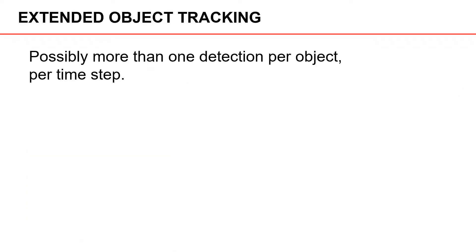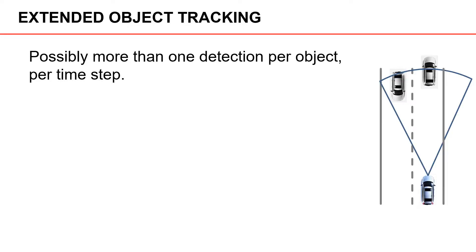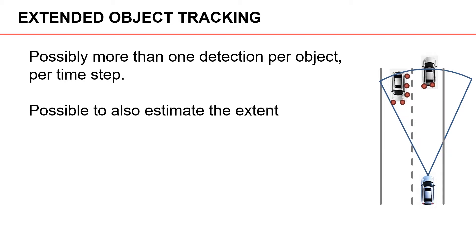The second type of tracking is called extended object tracking. In this case it is still possible that we get no detections for an object, but there can also be more than one detection per object. In extended object tracking we have multiple detections per vehicle, and that means it is possible to use the multiple detections to estimate the object's extent in addition to the position and motion parameters.